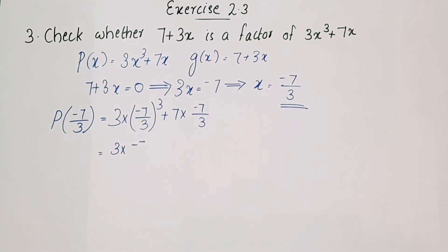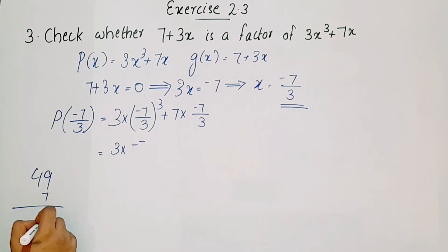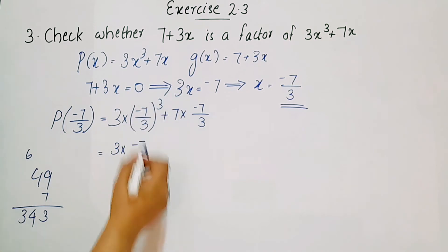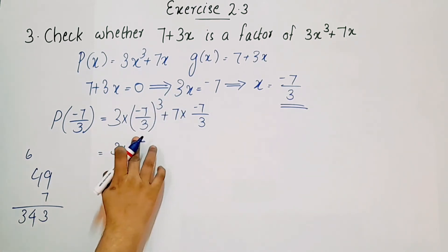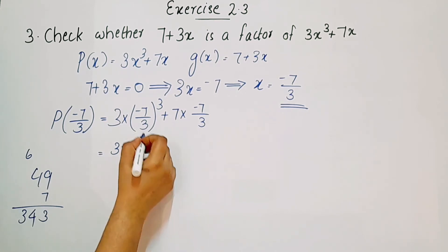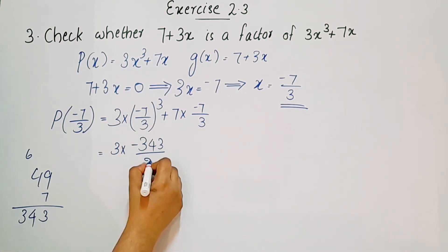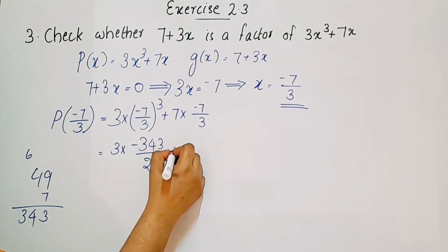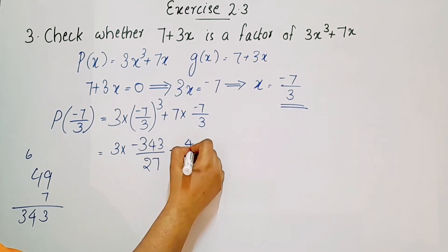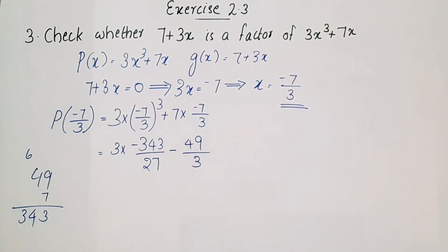Computing: 7³ equals 343, so we get negative 343 over 27 — since 3³ equals 27 — then minus 49 over 3.